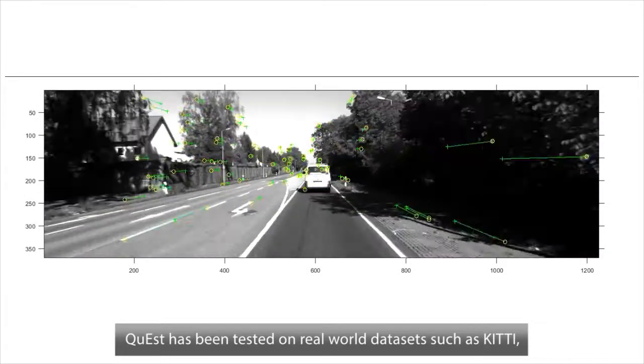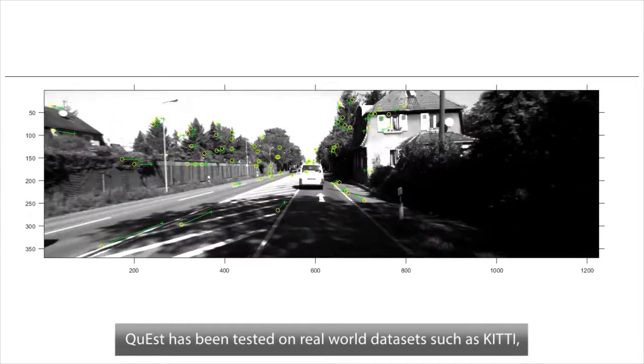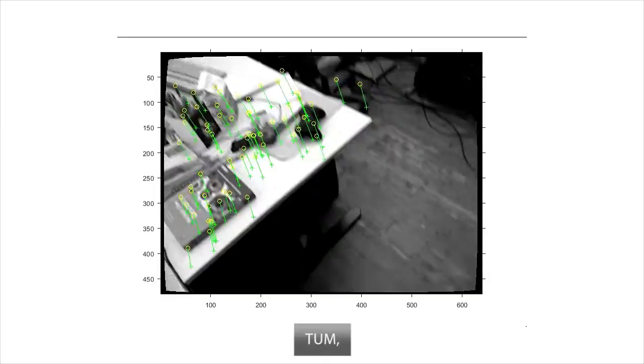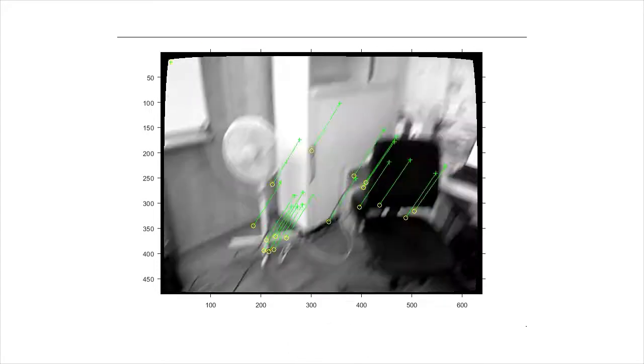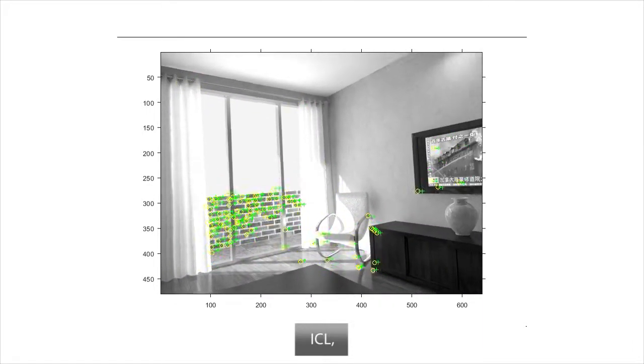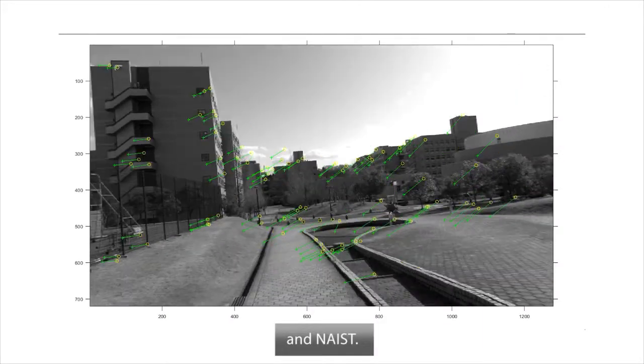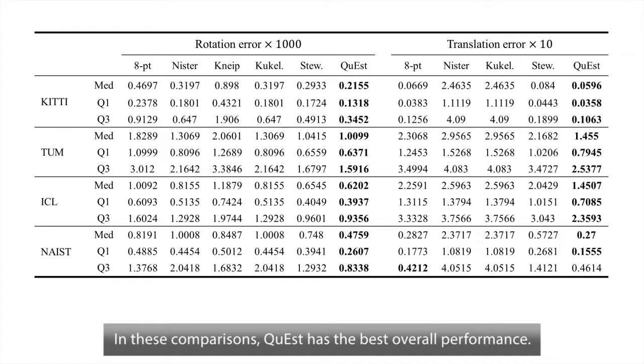Quest has been tested on real-world datasets such as KITTI Visual Odometry SLAM dataset, TUM RGBD SLAM dataset, ICL-NUIM RGBD benchmark dataset, and TrackMark's NACE campus dataset. In these comparisons, Quest has the best overall performance.